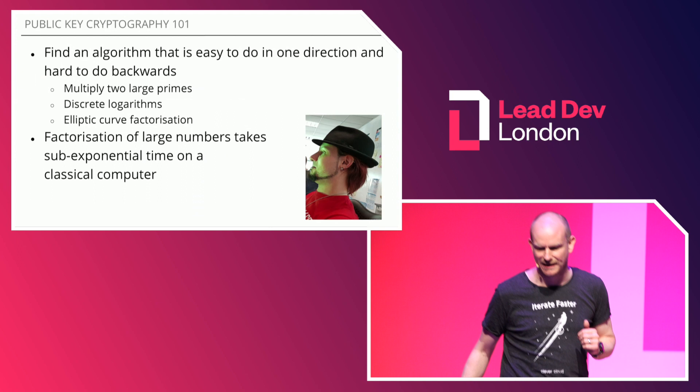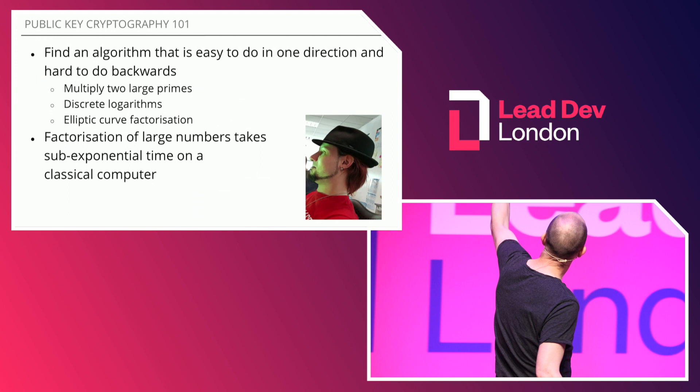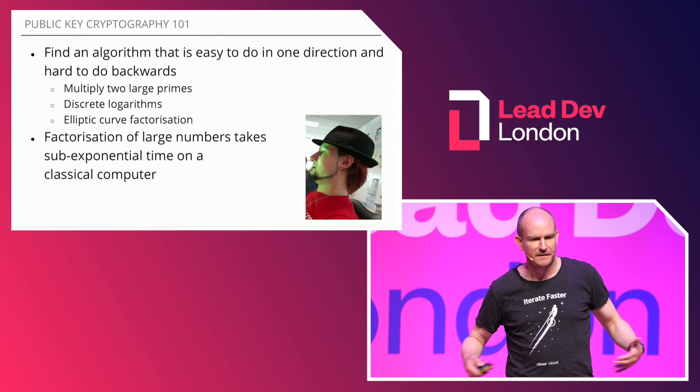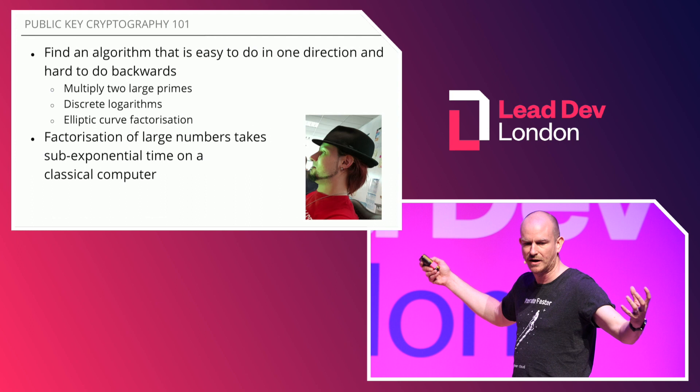Cryptography. I would hope everybody in the room knows the basics. Basically, cryptography relies on something that's easy to do in one direction and hard to do in the other direction. Typically, we multiply together two big prime numbers, which is easy to do, but to factorize that large number is hard.